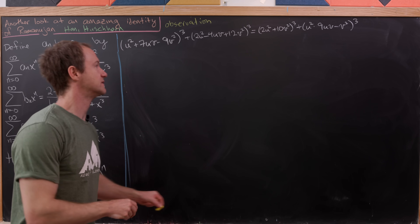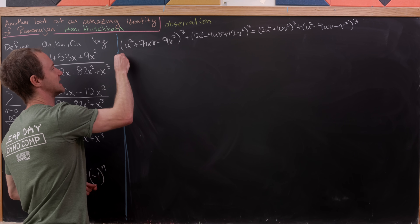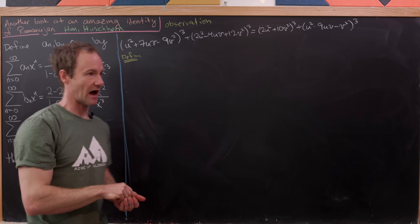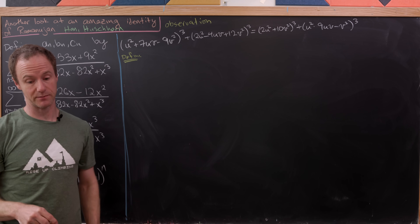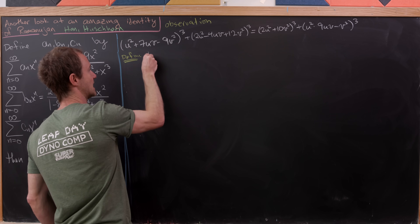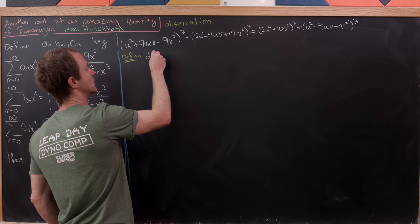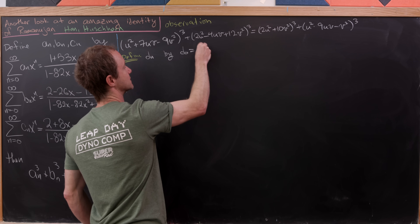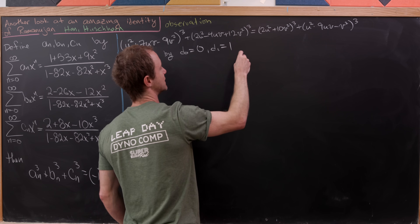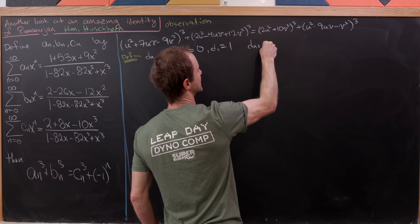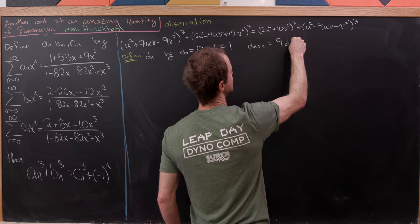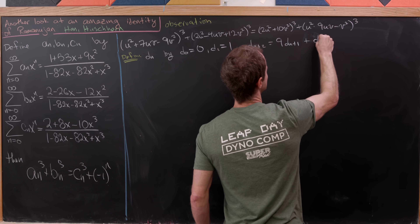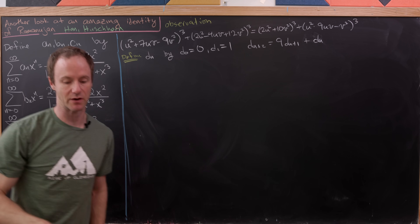Now I'd like to define what I'll call an accessory sequence, which will in turn be used to define our final sequences A_N, B_N, and C_N. That'll be D_N, defined by the following rules: D(0) = 0, D(1) = 1, and D(N+2) = 9·D(N+1) + D(N). So this is a Fibonacci-like sequence.